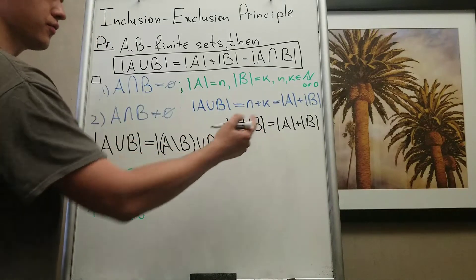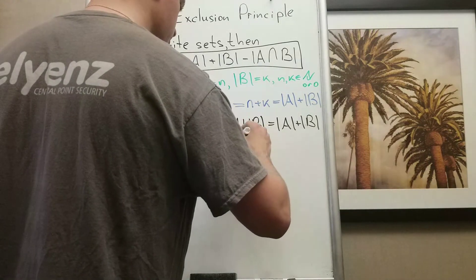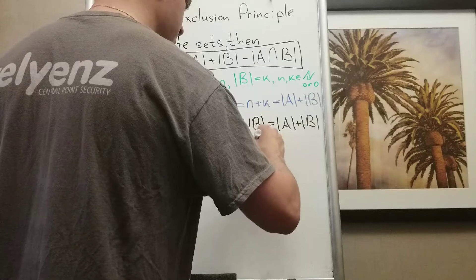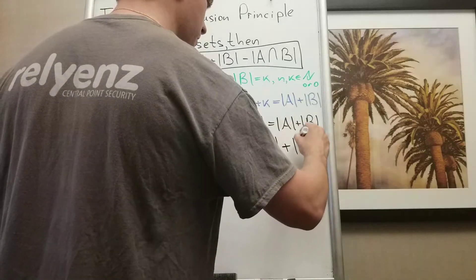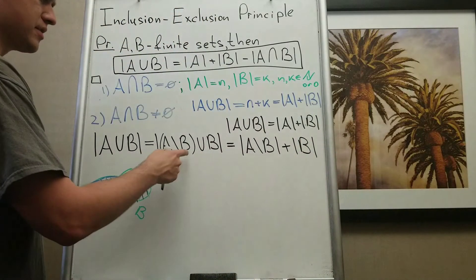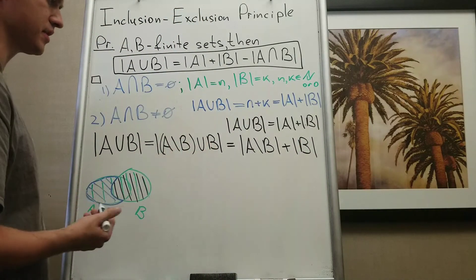And then according to this formula, I will get this equals cardinality of A minus B plus cardinality of B. Why? Because A minus B intersection B is empty set.